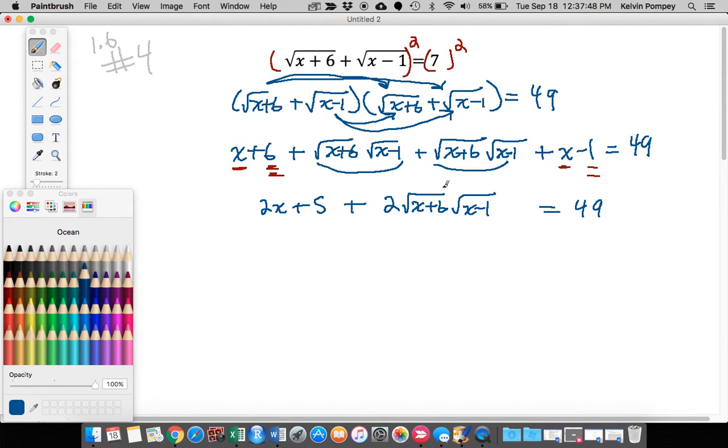I still have square roots here. So what I'm going to try to do now is get everything on one side and leave my square roots over here so I can square again to get rid of my x being under a radical. I'm going to subtract 2x and subtract 5 from both sides and I'll be left with square root of (x+6) times square root of (x-1) equals 44 minus 2x.